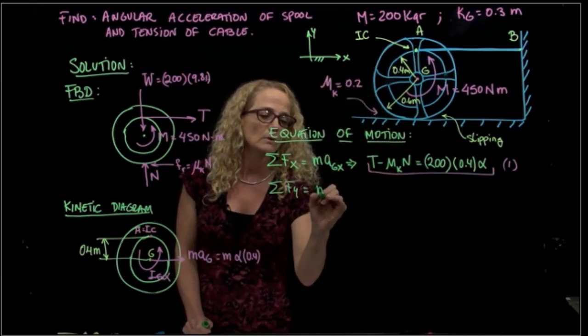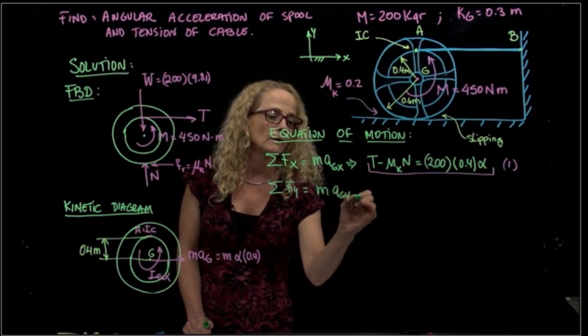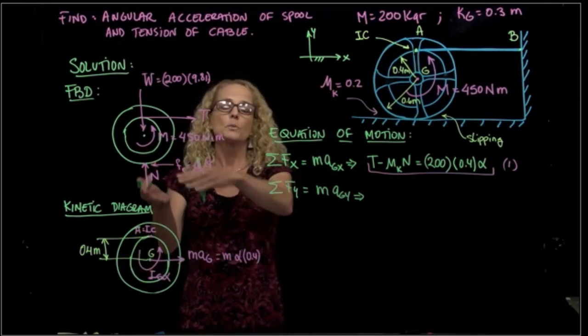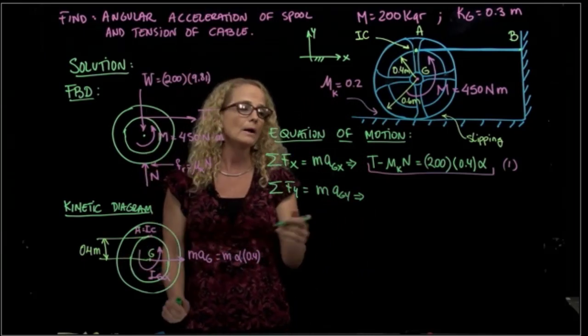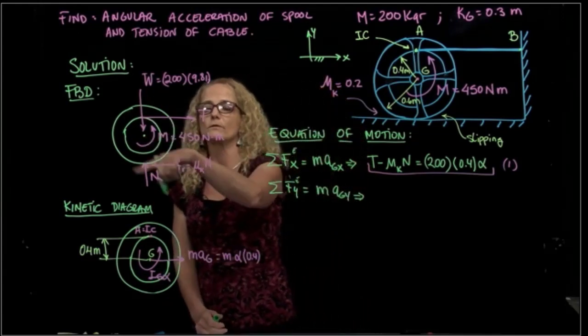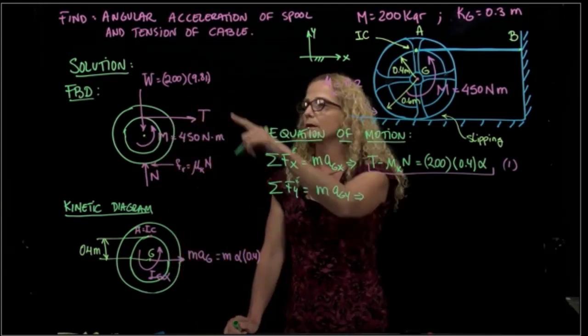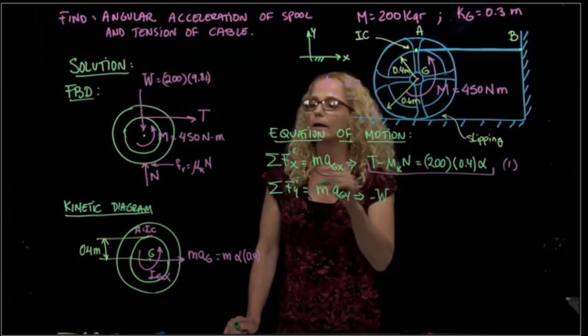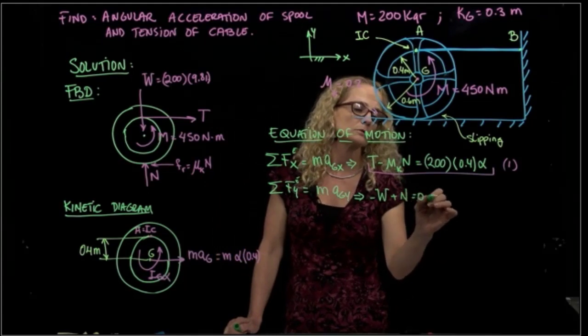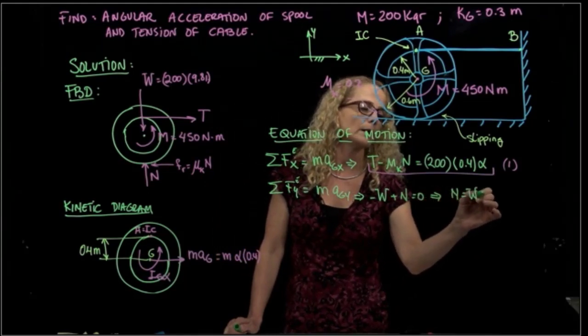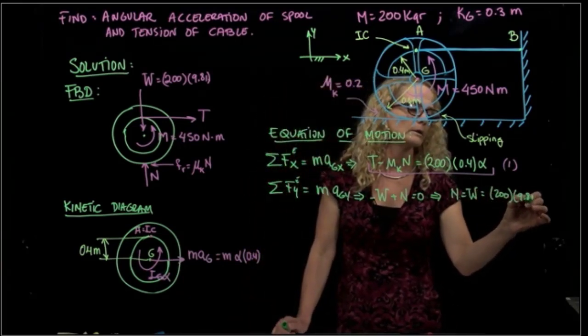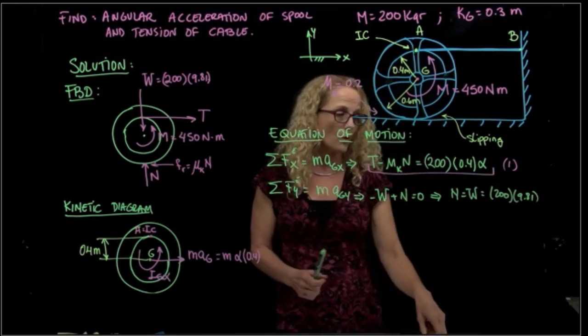I get my second equation. As you see, the acceleration in the Y direction is 0. The spool is not moving up and down. So I got only the external forces, which are the external forces of my free body diagram, which is equal to my weight, negative, and plus the normal force, is equal to 0. So here I have that the normal is equal to the weight, and the weight is known, 200 times 9.81. So I have one unknown less.